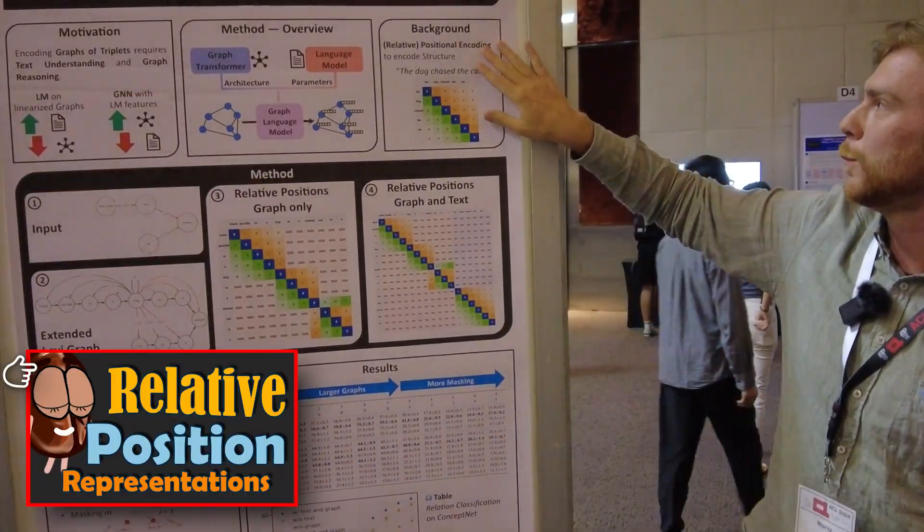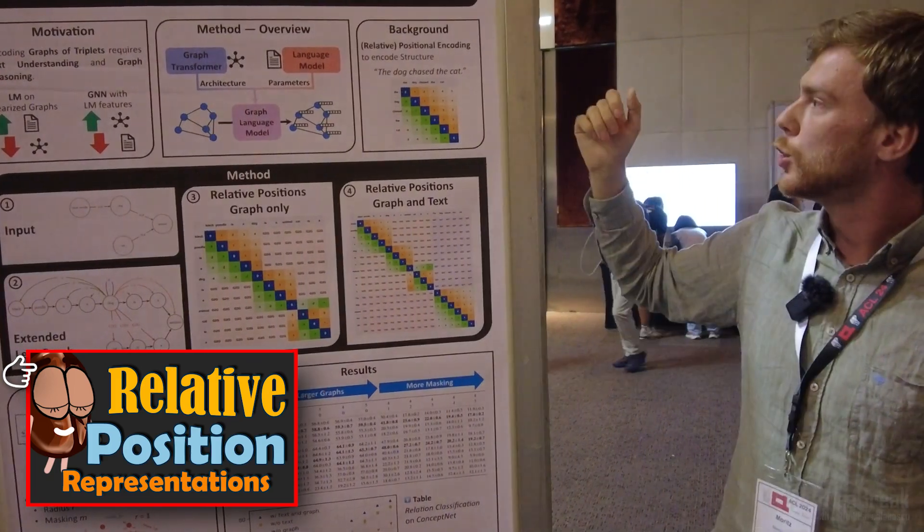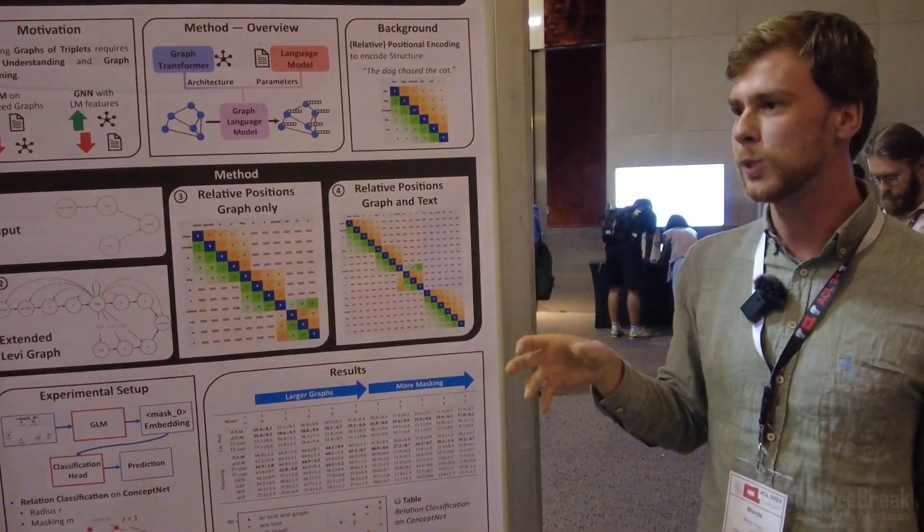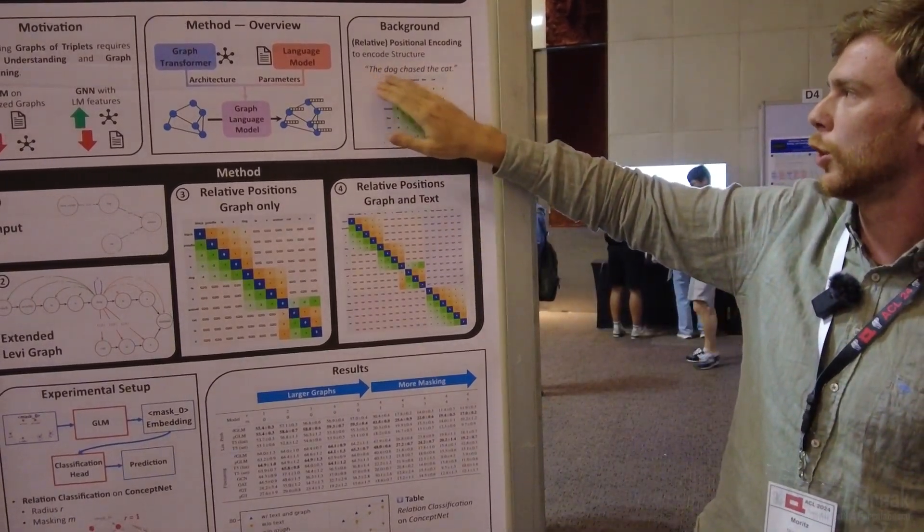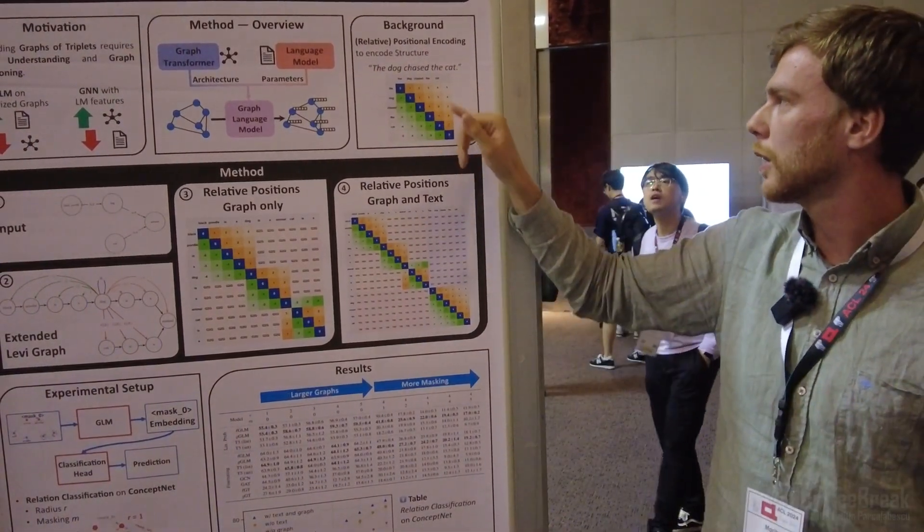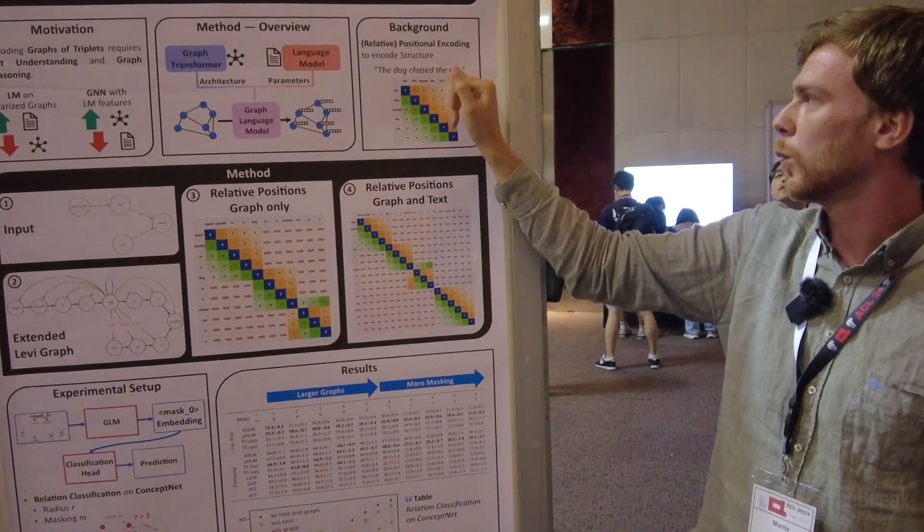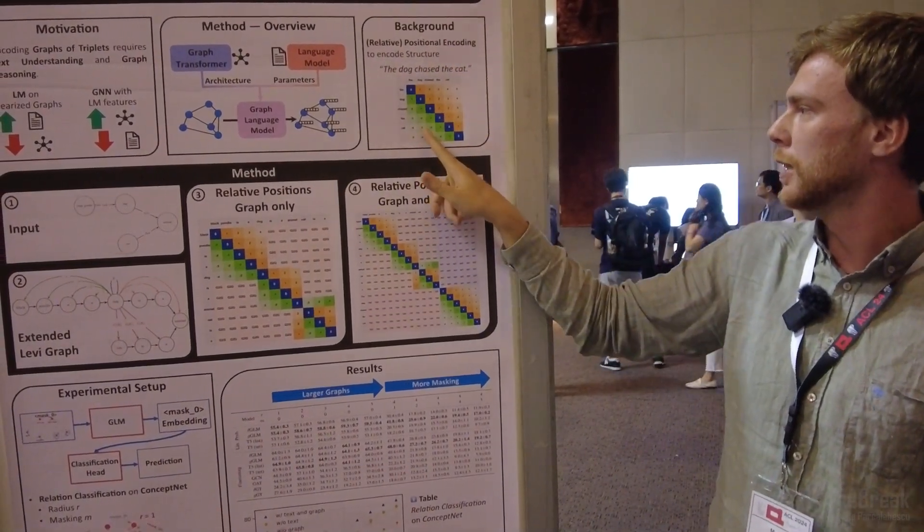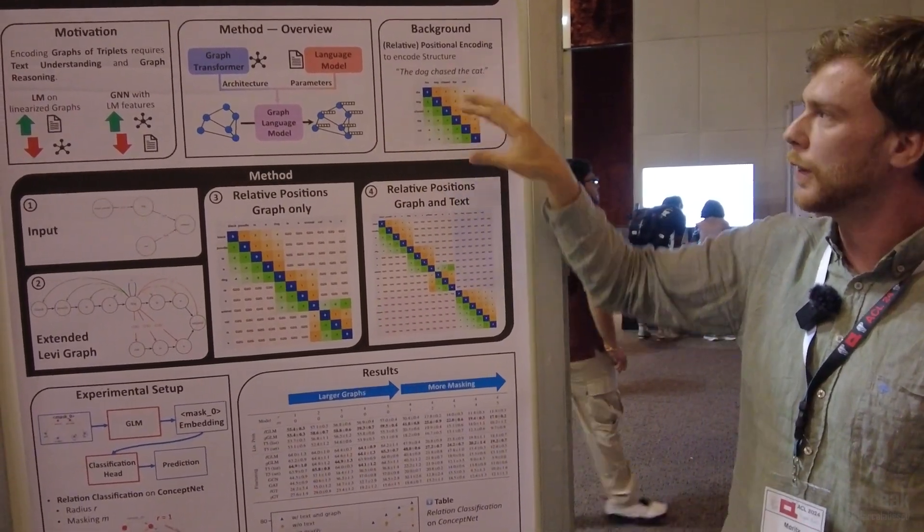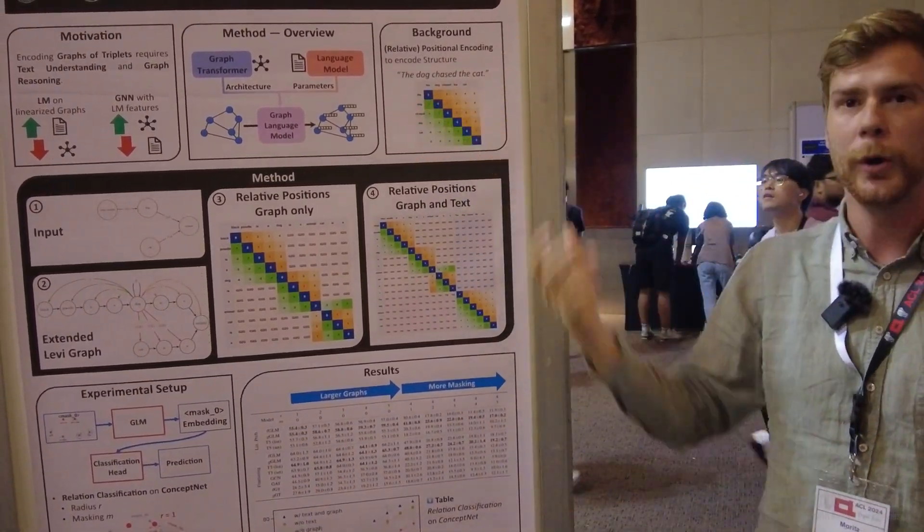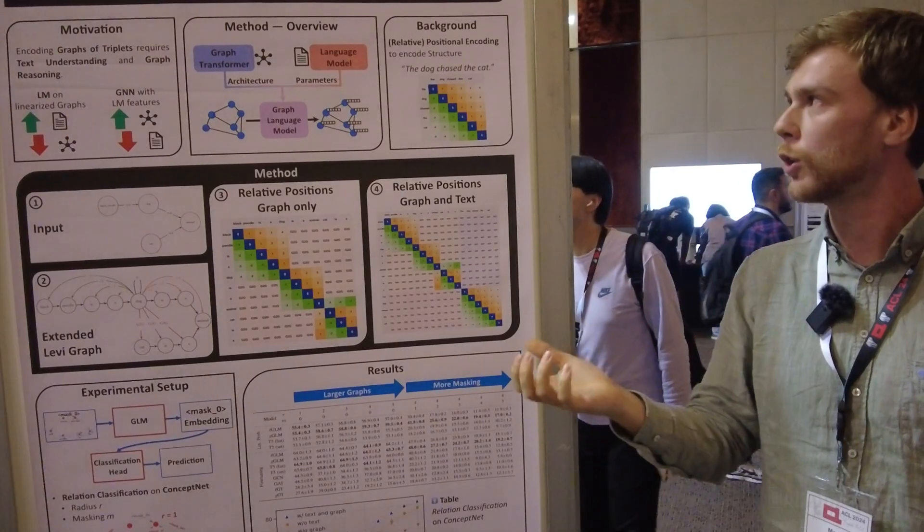To understand how we can do that in detail, we first have to look at the relative position encodings in normal text. If you have a transformer, it operates on a set of tokens without any structure. To change that for text, if you have a normal sentence like 'the dog chased the cat,' and we look at how far away dog is from cat—one, two, three—we put that here in such a matrix showing dog is three tokens ahead of cat. We give such a matrix to the model, and then the model has these relative distances which encode the structure of the data.